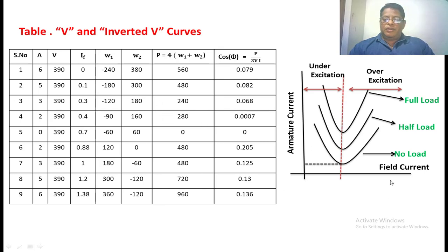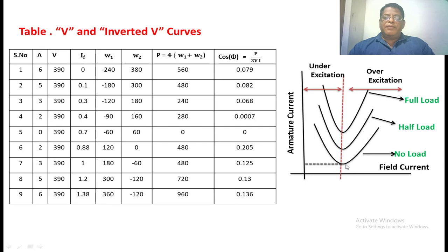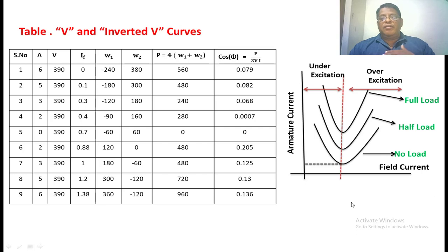At no load, we get a characteristic plot. If we repeat the same experiment at half load, we get another plot. The shape of these graphs is like a V-curve. As the load on the motor is increased and the test is conducted, the V-curve will be shifted upward.